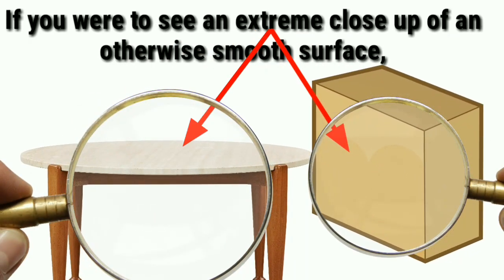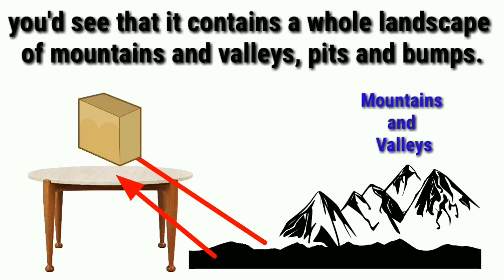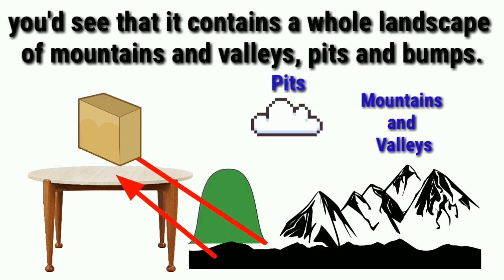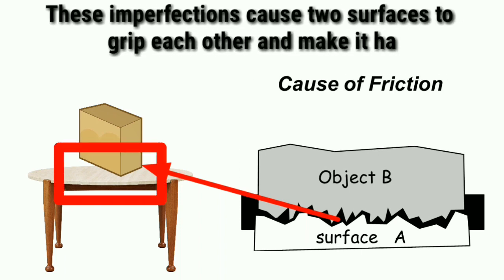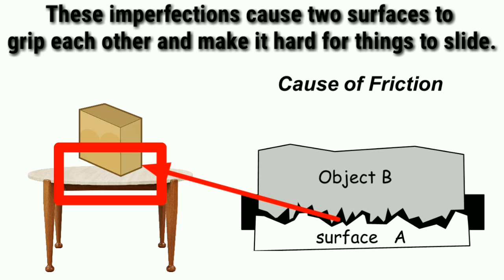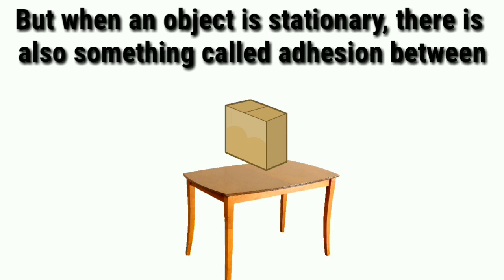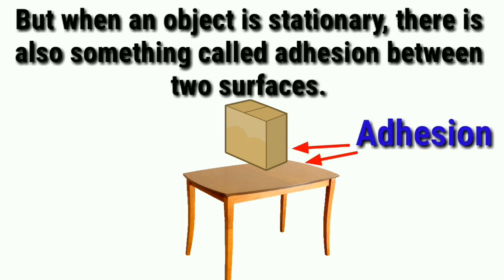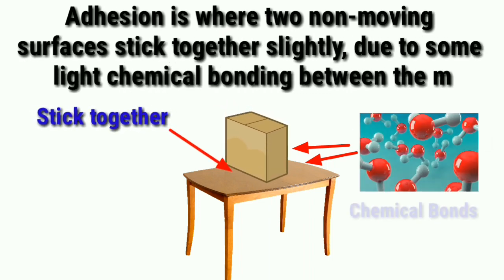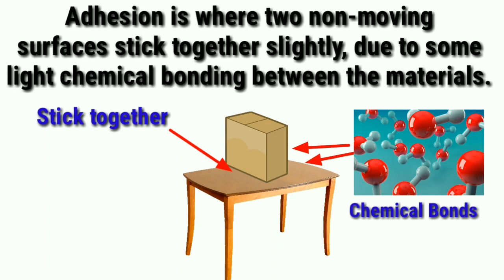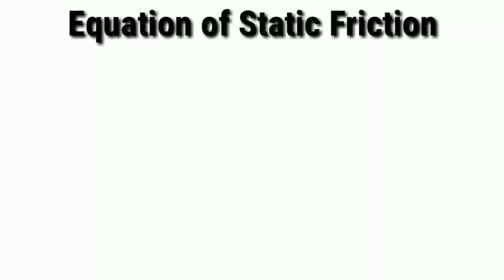Now, what causes friction? If you were to see an extreme close-up of an otherwise smooth surface, you'd see a whole landscape of mountains and valleys, pits and bumps. These imperfections cause two surfaces to grip each other and make it hard for things to slide. When an object is stationary, there is also adhesion between two surfaces — where two non-moving surfaces stick together slightly due to light chemical bonding. This is what makes static friction so strong.